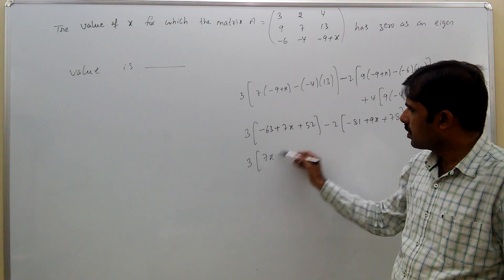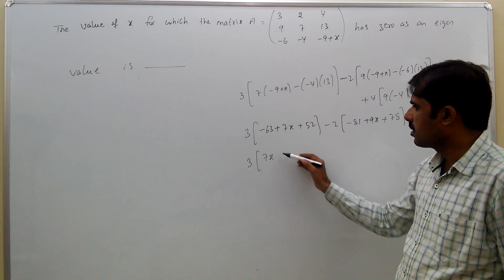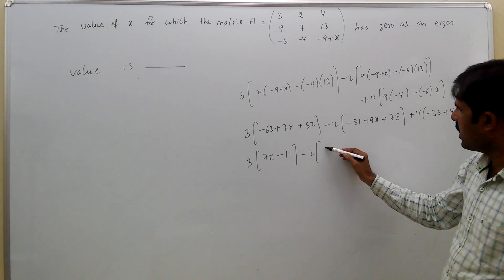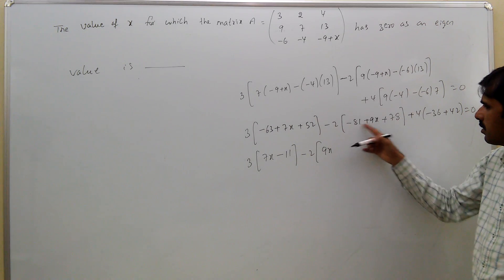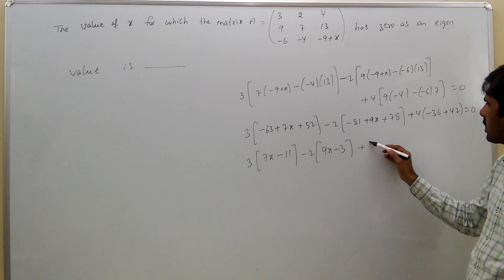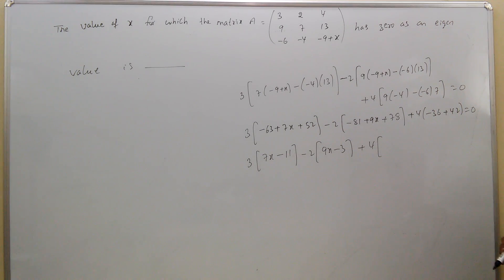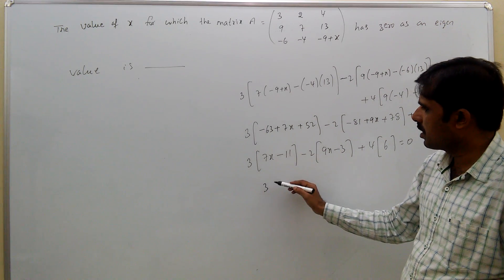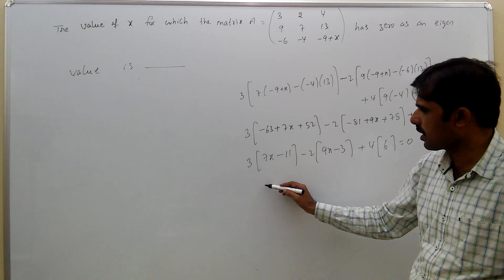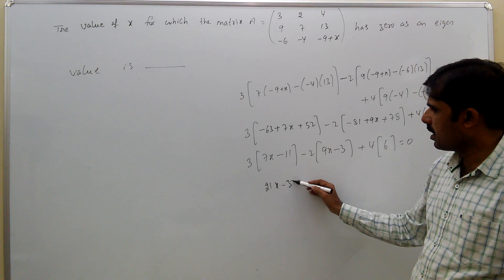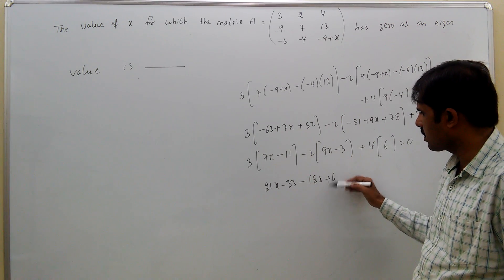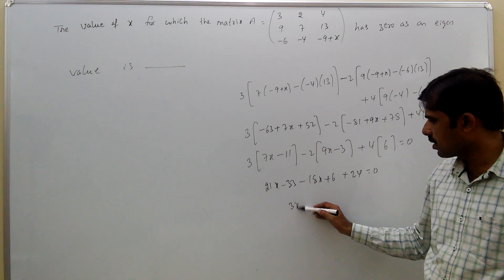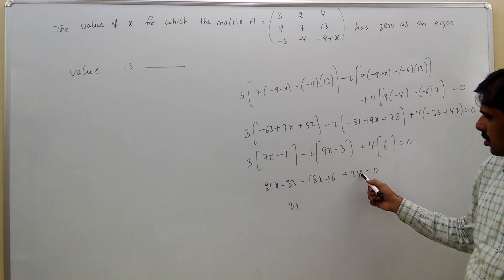That means: 3 into [7X minus 11], since 63 minus 52 is 11, minus 2 into [9X minus 3], since minus 81 plus 78 is minus 3, plus 4 into [6], since 42 minus 36 is 6, equal to 0. That gives: 21X minus 33 minus 18X plus 6.